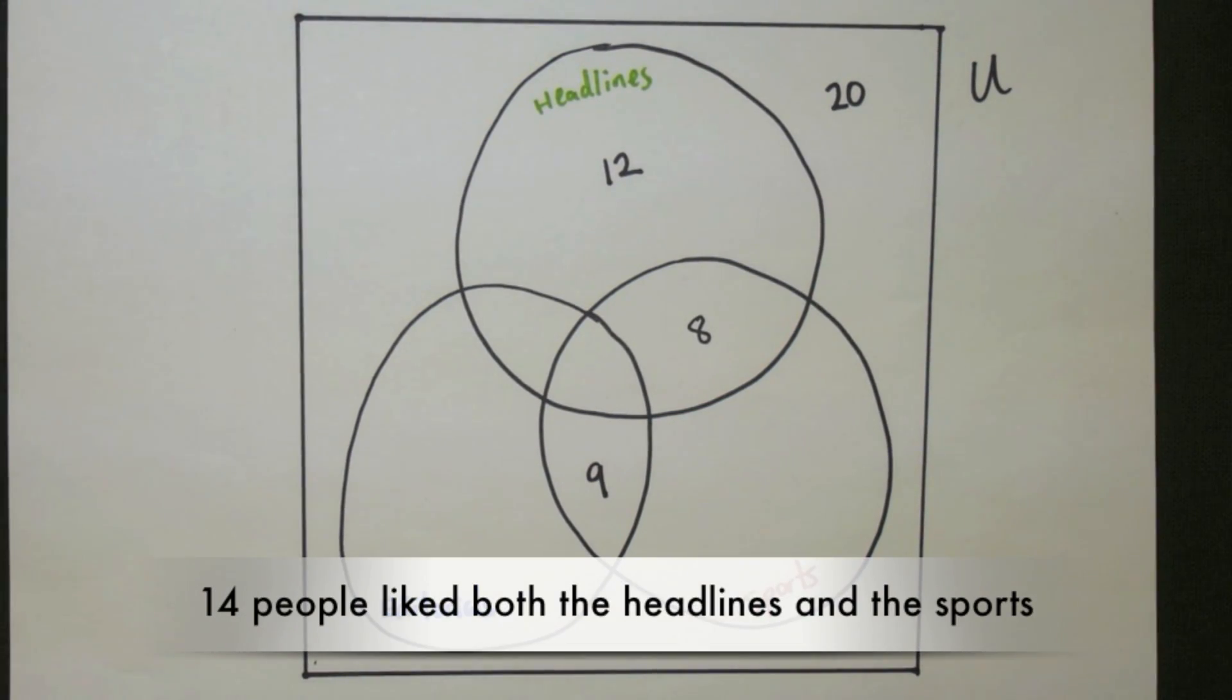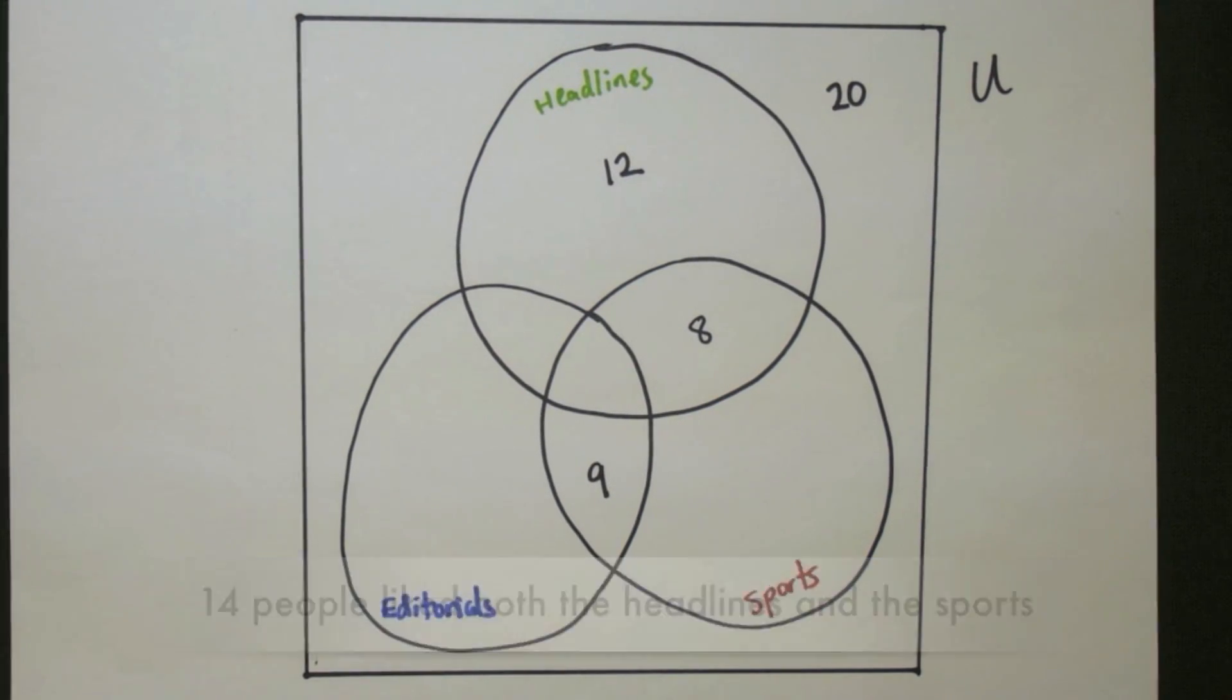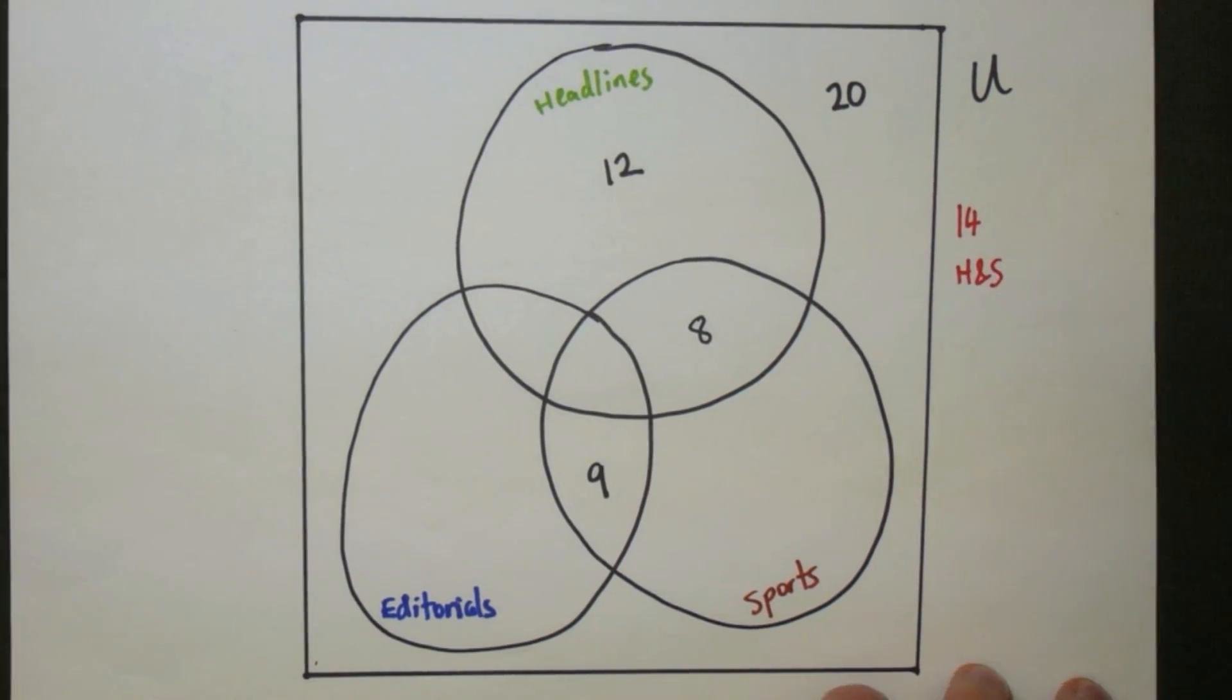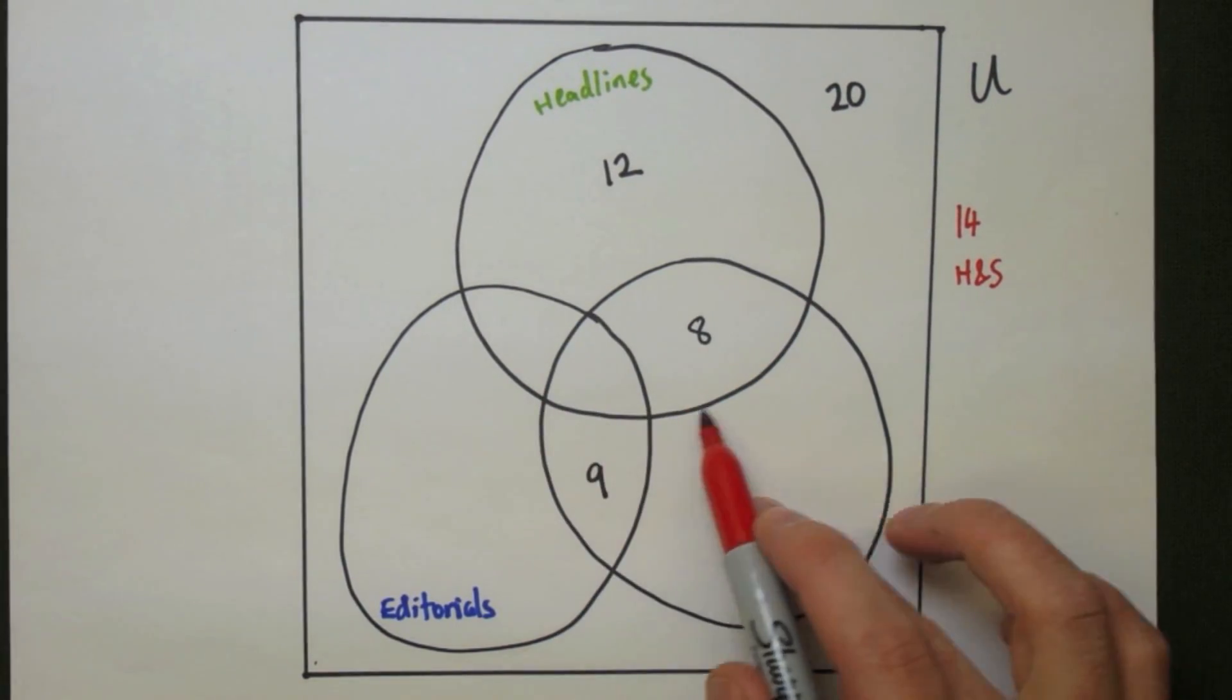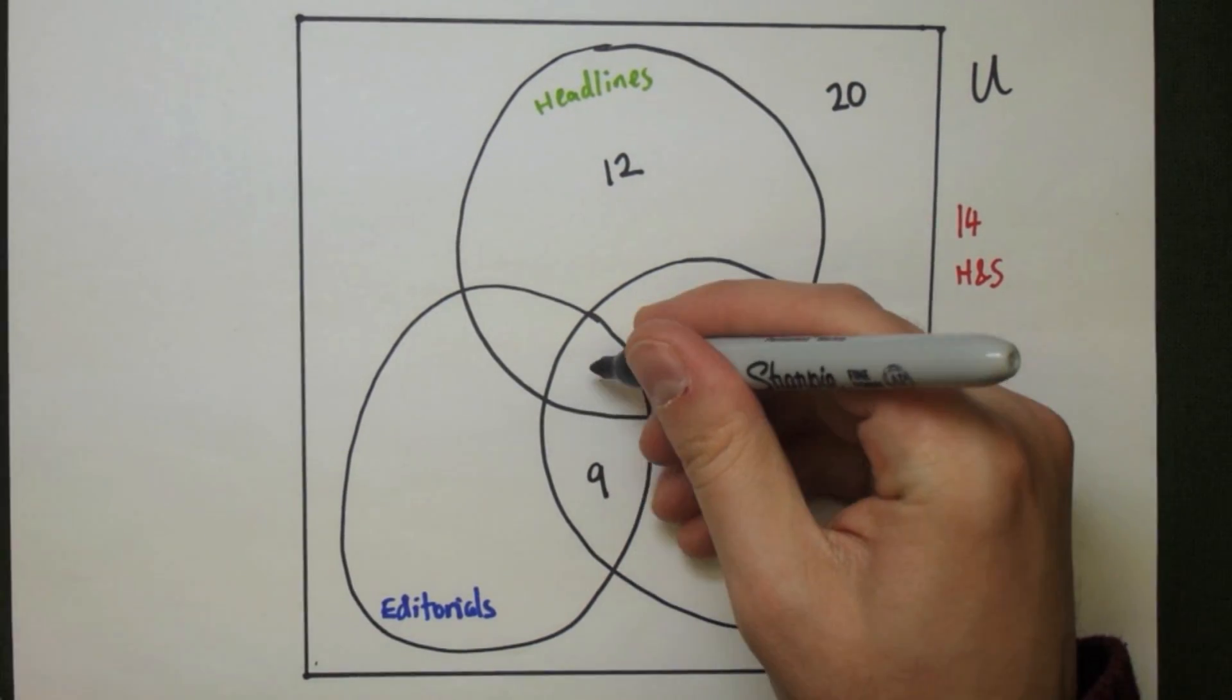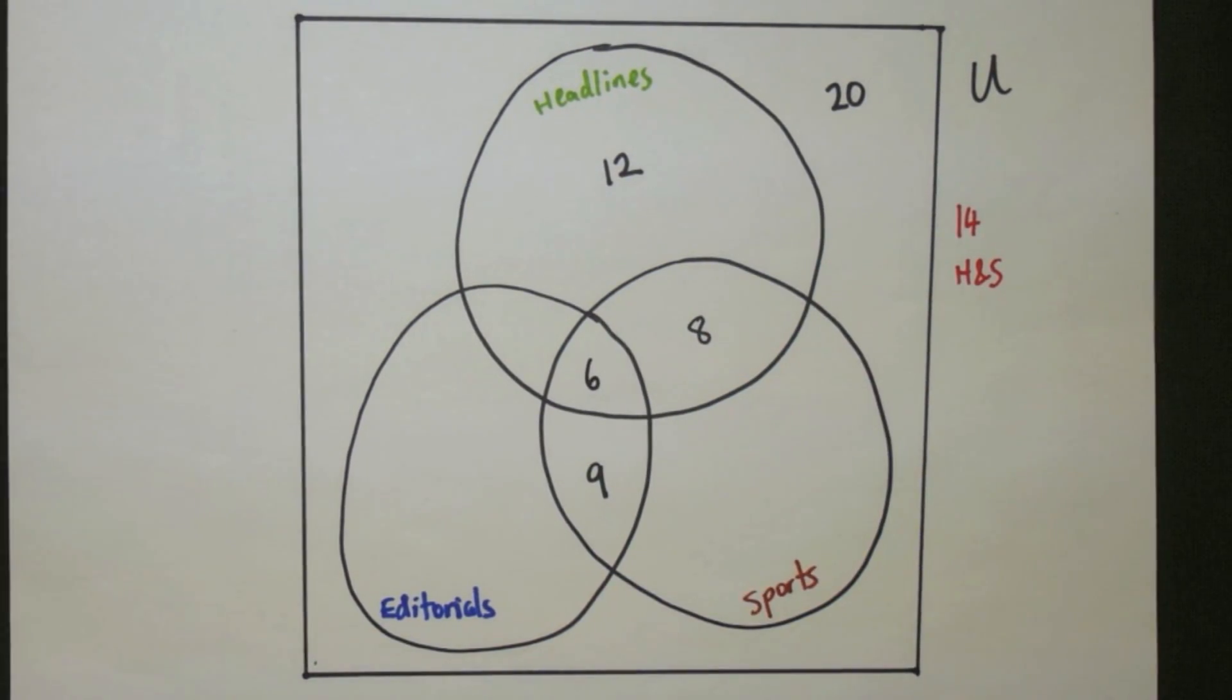14 people like both the headlines and the sports. Now, this is a little bit more tricky. We have 14 people. They like both headlines and sports. That's in this shape here. And so since 8 of those people are already taken up, the remaining 6 of them have to fill up the rest of the shape.